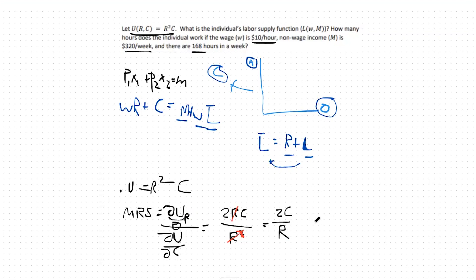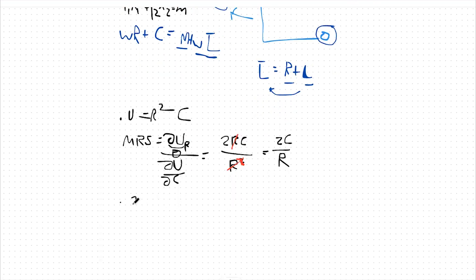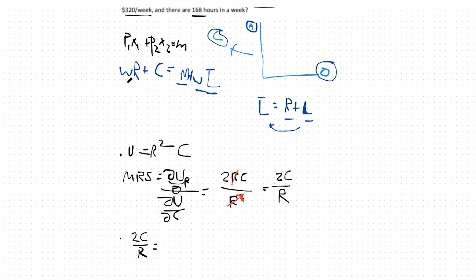Our next step is going to be to equate our MRS to our price ratio just as before. Our price ratio in this case is P1 over P2 so it's going to be W over 1 or just W. So 2C over R equals our wage rate.